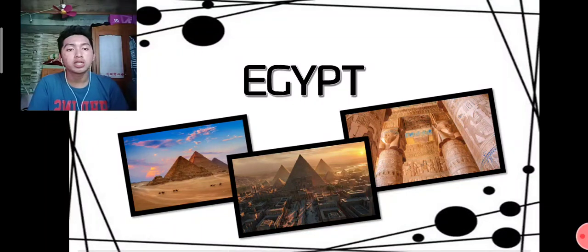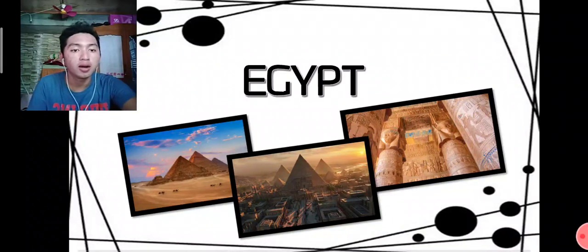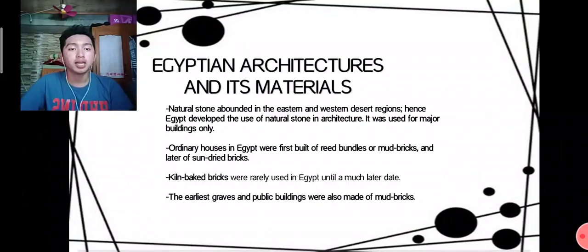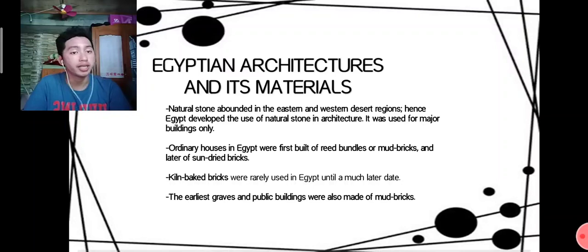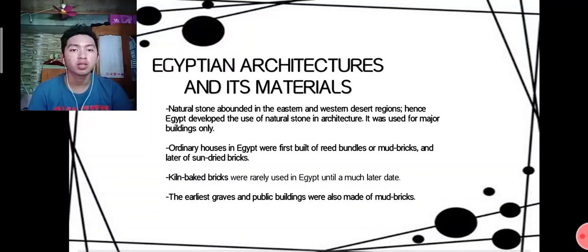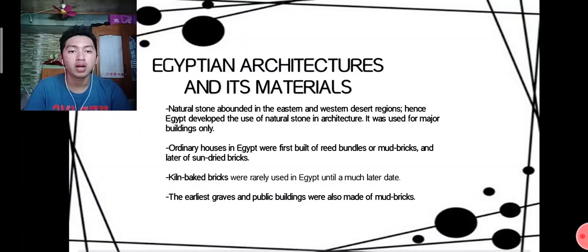Now we proceed to Egypt. Natural stone abounded in the eastern and western desert regions; hence, Egypt developed the use of natural stone in architecture, and it was used for major buildings only. The ordinary houses in Egypt were first built of reed bundles or mud bricks, or later of sand-dried bricks.